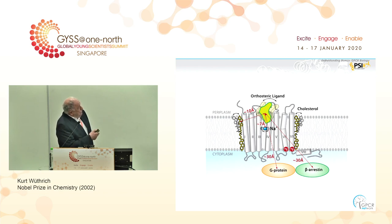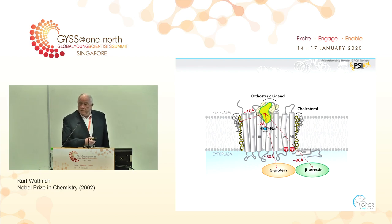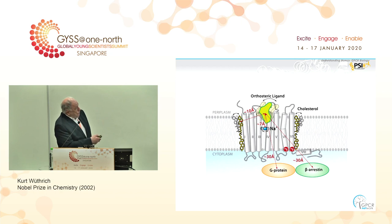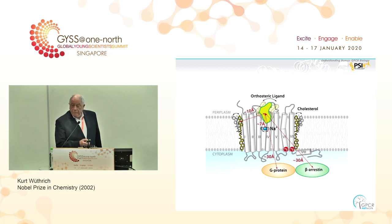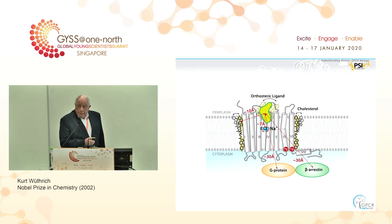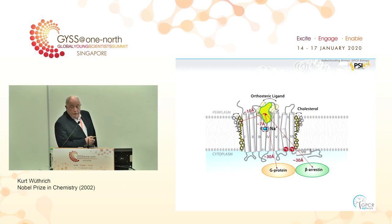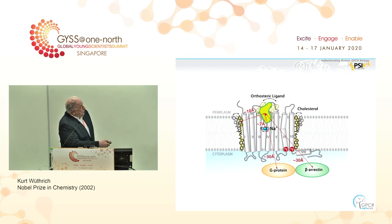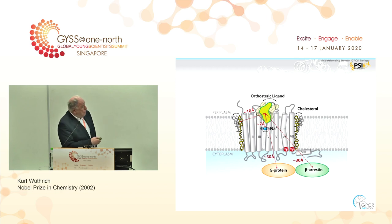It was very late that three-dimensional structures could be determined — it was technically very difficult. Only in 2007 was the first structure of a human GPCR determined by X-ray crystallography. Now we have about 40 different GPCR structures determined either by crystallography or by cryo-electron microscopy. But all these techniques use strongly immobilized preparations of the membrane proteins.